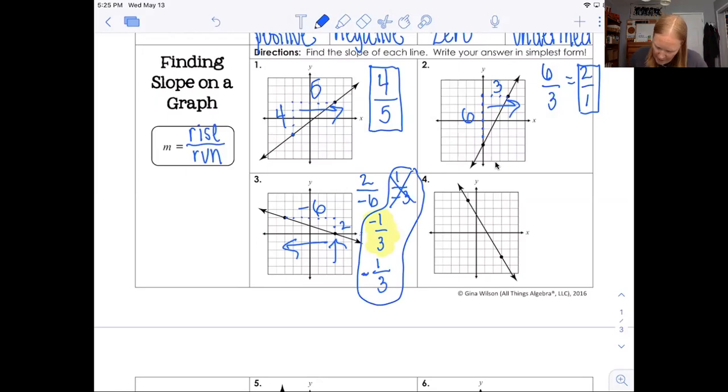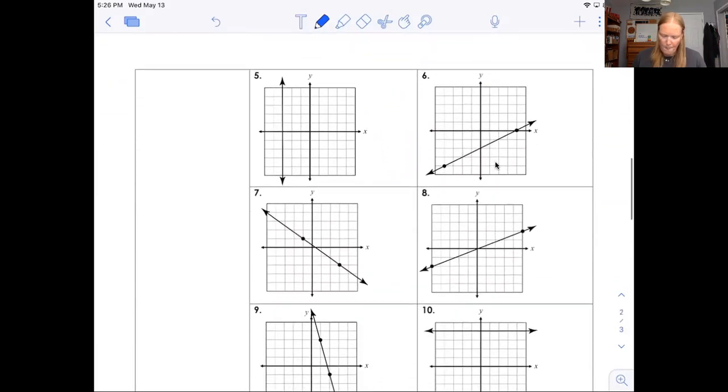So let's do number four. Again, I'm going to start at the bottom. I'm going to rise one, two, three, four, five, six, seven. And I'm going to run in the negative direction. One, two, three, four. So I run negative four. So my rise was seven. My run was negative four. I'm going to put the negative sign in the middle. So hopefully you guys are getting a good idea of how to count slope. We're just going to look at two more.